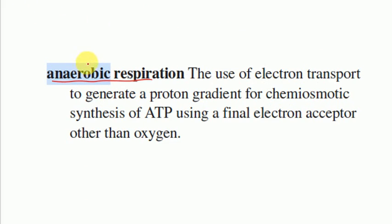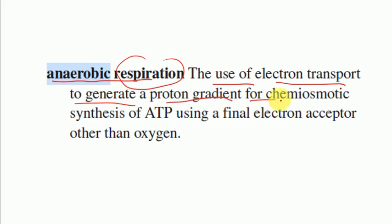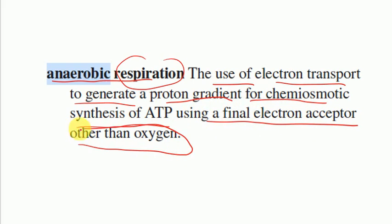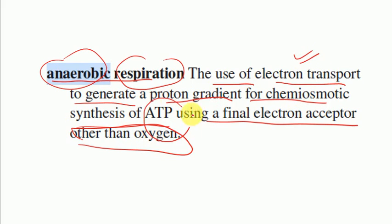Anaerobic respiration is the use of electron transport to generate a proton gradient for chemiosmotic synthesis of ATP, using a final electron acceptor other than oxygen. In aerobic respiration the final electron acceptor is oxygen, but in anaerobic respiration it is something other than oxygen. Electron transport still happens to generate a proton gradient for ATP synthesis, so ATP is still formed.